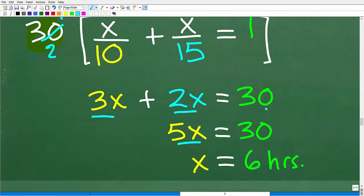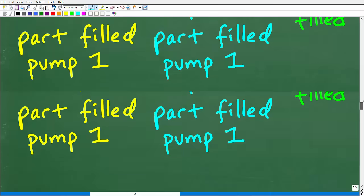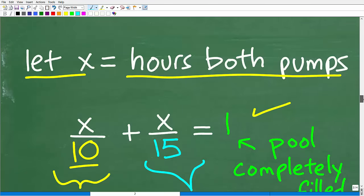We'll take a look at what we have. We pretty much have the same equation. 3X plus 2X, 5X is equal to 30. Divide both sides of the equation by 5. X is equal to 6. 6 what? Hours. Because we define X as the number of hours up here. It would take both pumps working together.